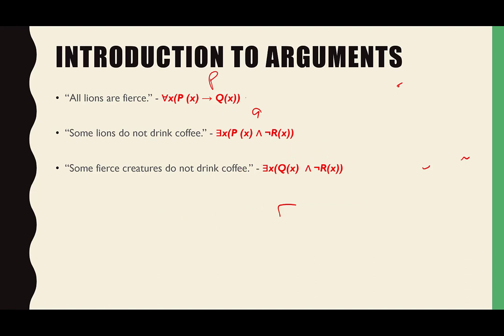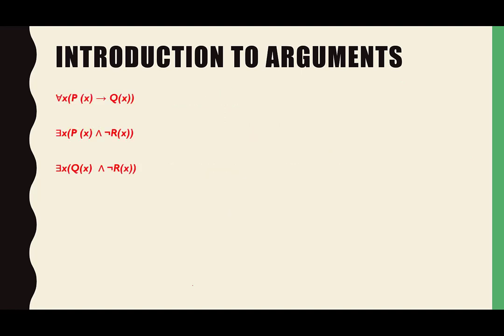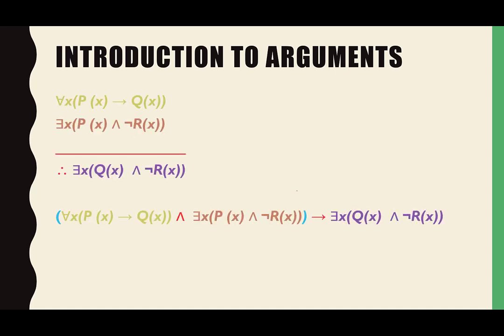We just have to do it mathematically to make sure we know what we're talking about. The formal way you write this is: you write the premises, then draw a line, then put three little dots which stand for 'therefore,' and then write your conclusion.